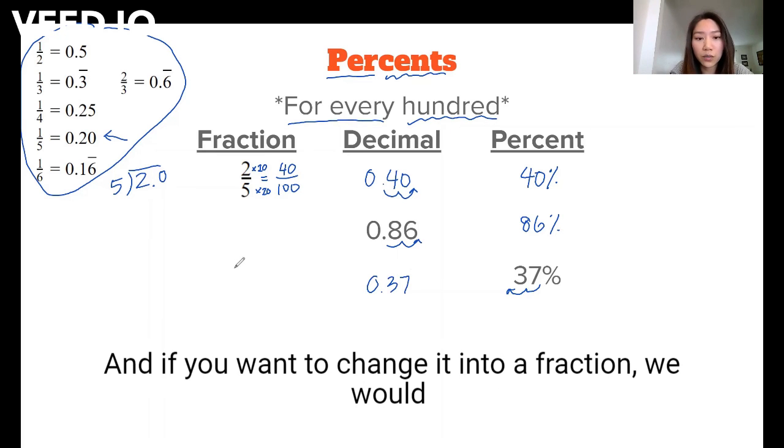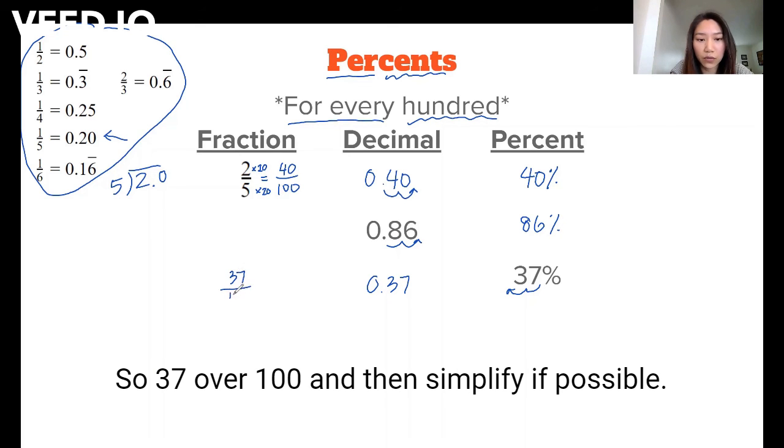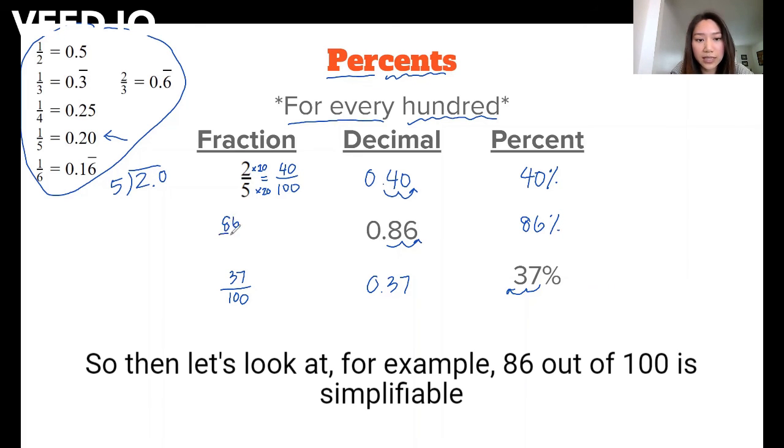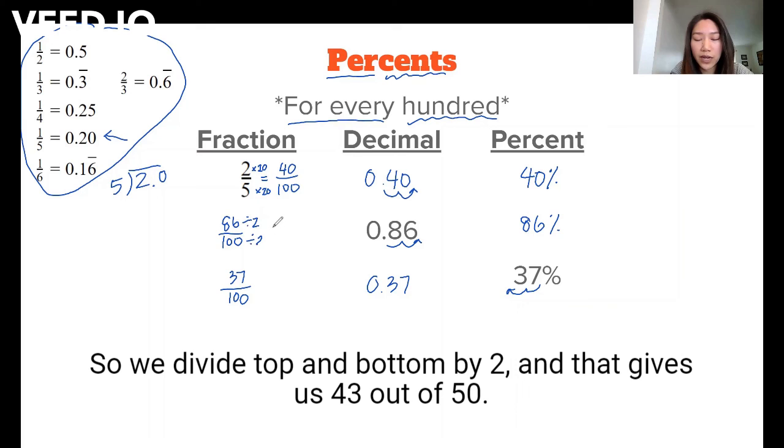And if you want to change it into a fraction, we would put it out of a hundred because it means for every hundred. So 37 over a hundred, and then simplify if possible. But this one is not simplifiable, so then let's look at, for example, 86 out of a hundred is simplifiable because the numerator and denominator are both even, so they're both divisible by two. So we divide top and bottom by two, and that gives us 43 out of 50.